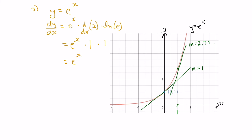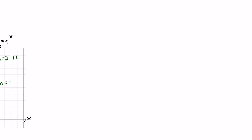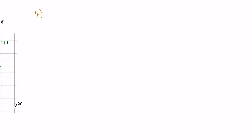Let's look at one more example combining several rules. We want to find the derivative of x squared times e to the 2x. We have two functions multiplied together, so we use the product rule, combined with the power rule for x squared and the exponential formula for e to the 2x. Applying the product rule: y prime equals the derivative of the first, which is 2x, times the second function e to the 2x, plus the first function x squared times the derivative of e to the 2x. Using the exponential formula, that derivative is e to the 2x times the derivative of 2x, which is 2, times the natural logarithm of base e, which is 1.